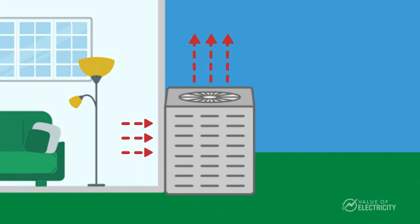When it's warm outside, the heat pump pulls the warm air out of your home and moves it outside. When it's cold outside, it works in reverse, pulling the heat from the outdoor air and transferring it inside.